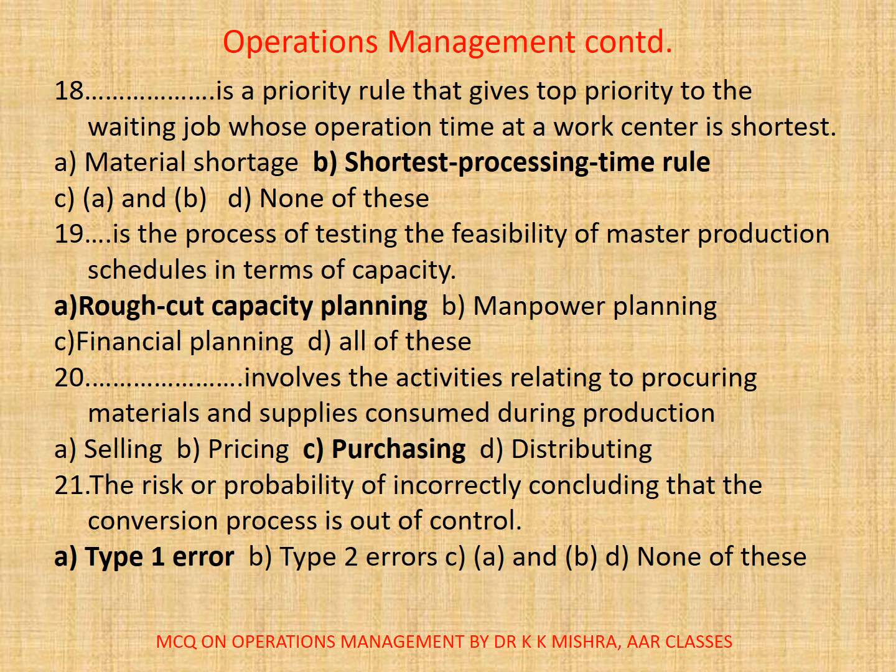19. Dash is the process of testing the feasibility of master production schedules in terms of capacity. A. Rough cut capacity planning. B. Manpower planning. C. Financial planning. D. All of these. The correct option is A. Rough cut capacity planning.